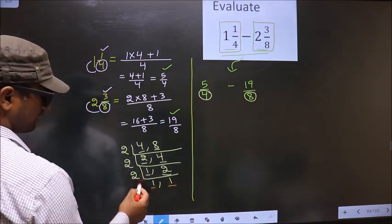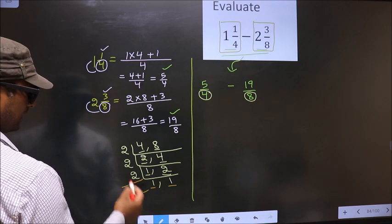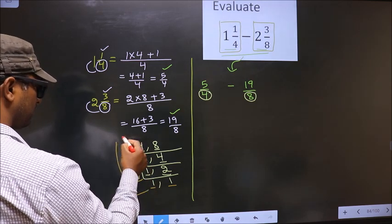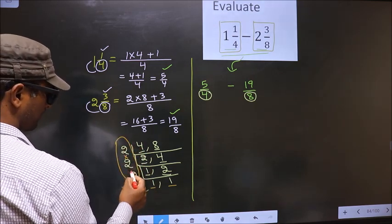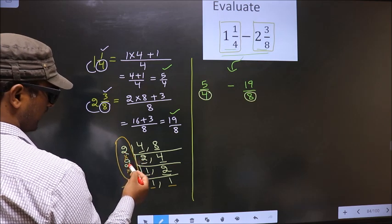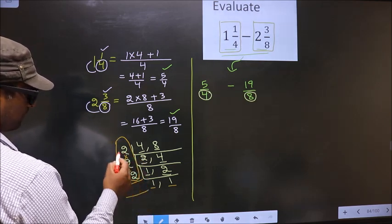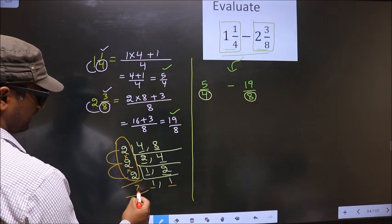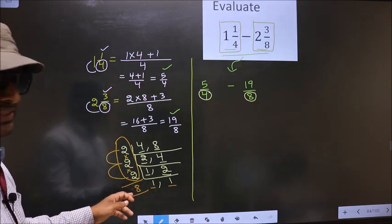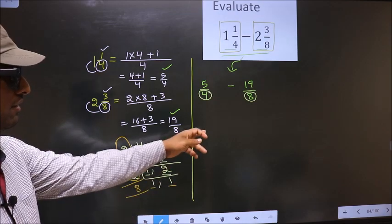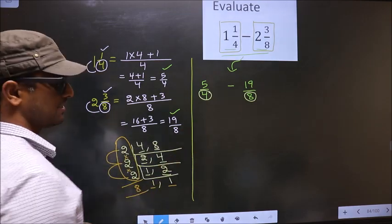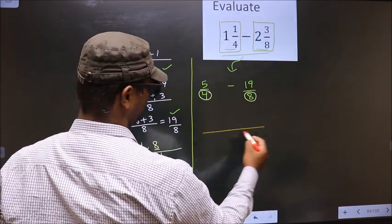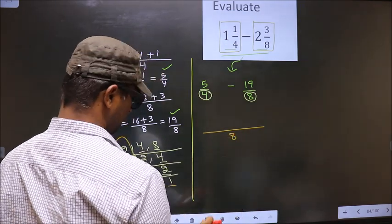Now, we got 1 in both the places. So, our LCM is the product of these numbers. That is 2 into 2 into 2. So, 2 into 2 is 4 into 2 is 8. Whatever LCM we got here, we should write here in this way.